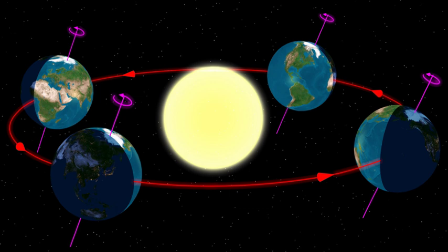From a vantage point above the north pole of either the Sun or Earth, Earth would appear to revolve in a counterclockwise direction around the Sun. From the same vantage point, both the Earth and the Sun would appear to rotate also in a counterclockwise direction about their respective axes.